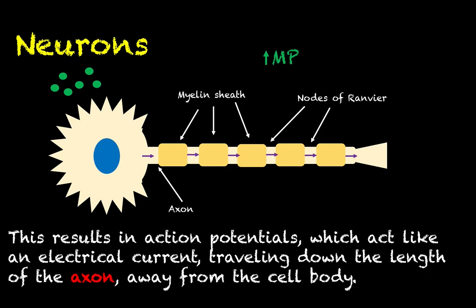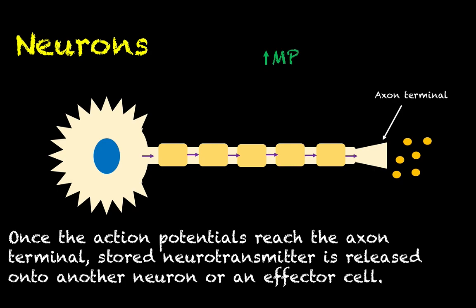These action potentials act like an electrical current — basically a wave of ions moving down the length of the axon away from the cell body. Many axons in the body are covered by a fatty membranous insulation called the myelin sheath, which we will discuss shortly. There are gaps between the myelin sheath called nodes of Ranvier that will become more important when we study the nervous system in earnest. Once the action potential reaches the end of the axon — called the axon terminal — it triggers the release of neurotransmitter, which then stimulates whatever effector cell is downstream, whether that's another neuron or an actual effector like a muscle or glandular cell, eliciting a physiological response.